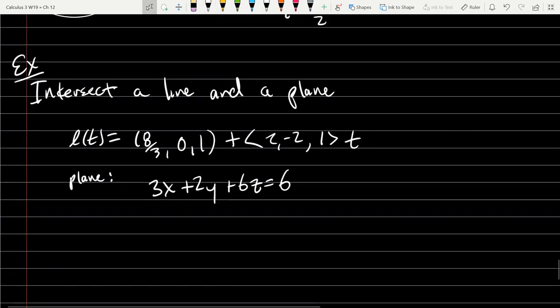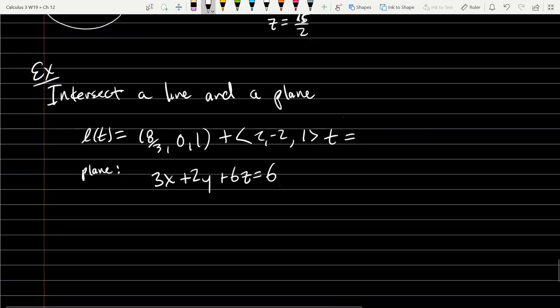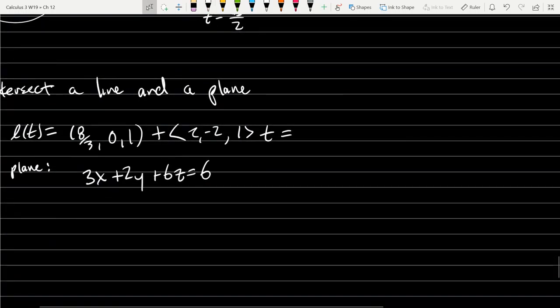It may not be obvious how to intersect these written in this form, but what I'm going to do is write out the parametric equations for the line. So let's write it in parameterized form.